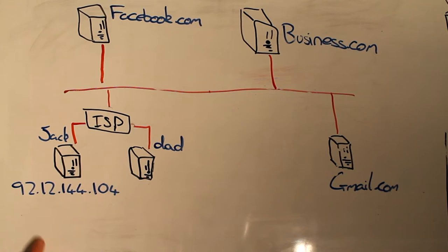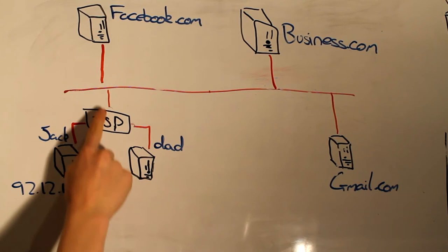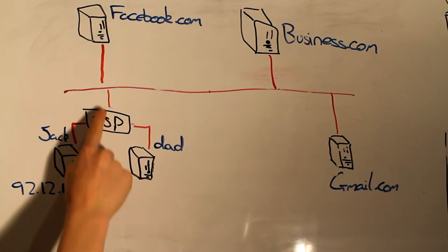For example, Jax is 92.12.144.104. If he wanted to update his Facebook status to say his relationship is complicated and his dad was doing important business, they are both on the same ISP.